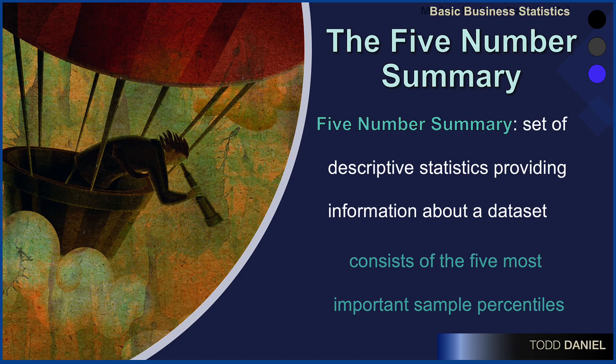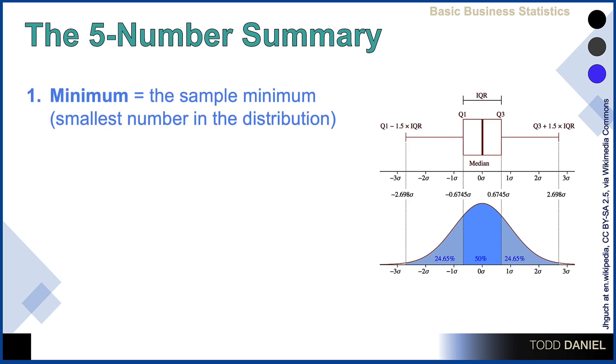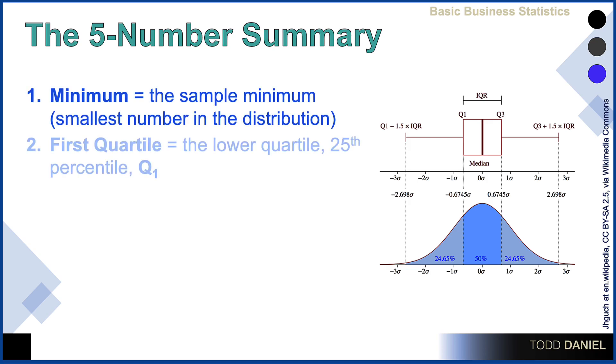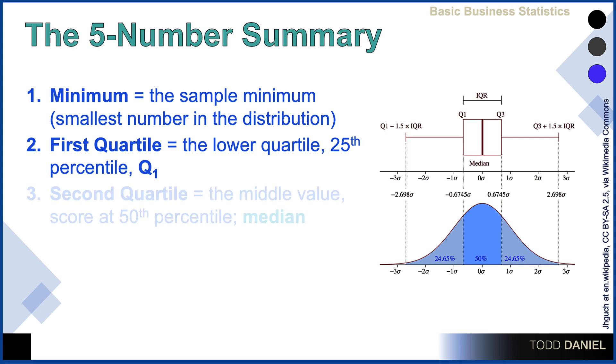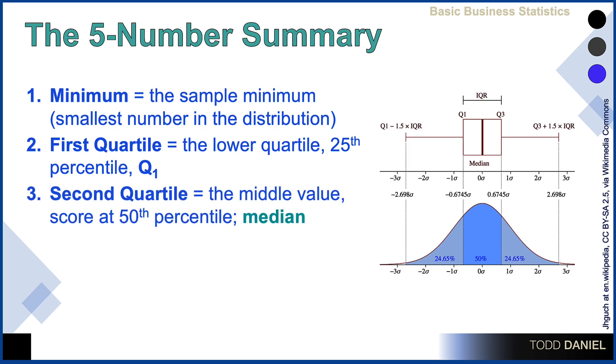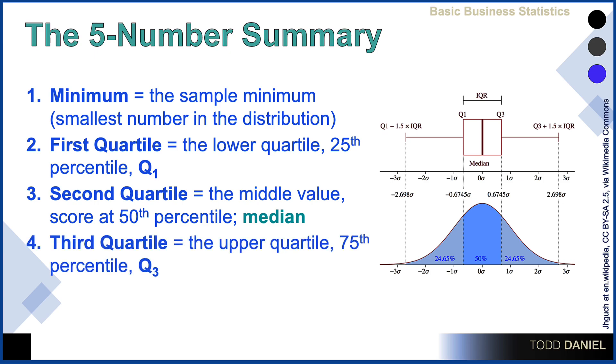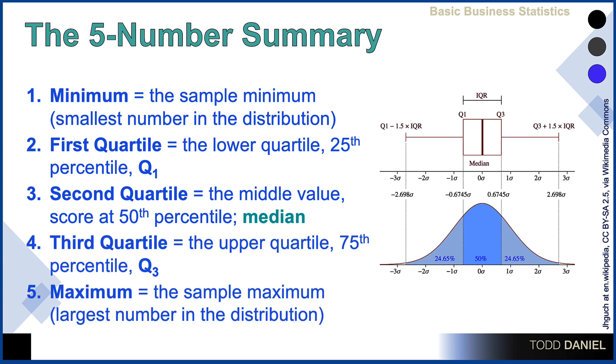The five-number summary is a set of descriptive statistics providing information about a data set, and it consists of the five most important sample percentiles: the minimum, which is the smallest number in the distribution; the first quartile; the second quartile, which is the 50th percentile or the median; the third quartile; and the maximum, which is the largest number in the distribution. The difference between the first quartile and the third quartile is the interquartile range, or the middle 50 percent of the scores.